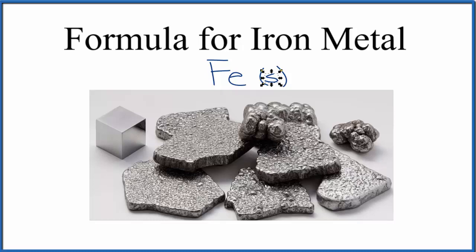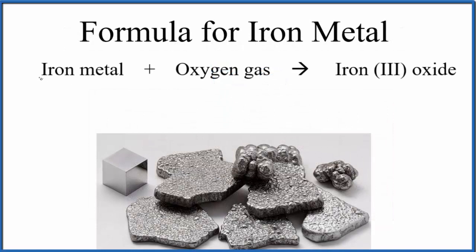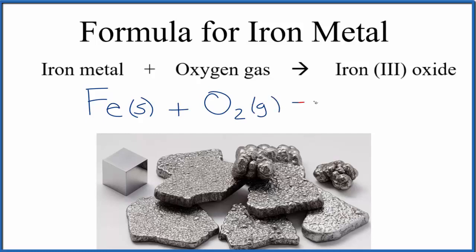Let's take a look at a word equation that uses iron metal. This is fairly typical: iron metal plus oxygen gas gives you iron 3 oxide. If you were asked to write the formulas for each compound, iron metal would again be Fe(s). Oxygen gas is a diatomic molecule, so that would be O2(g). And then iron 3 oxide would be Fe2O3(s).